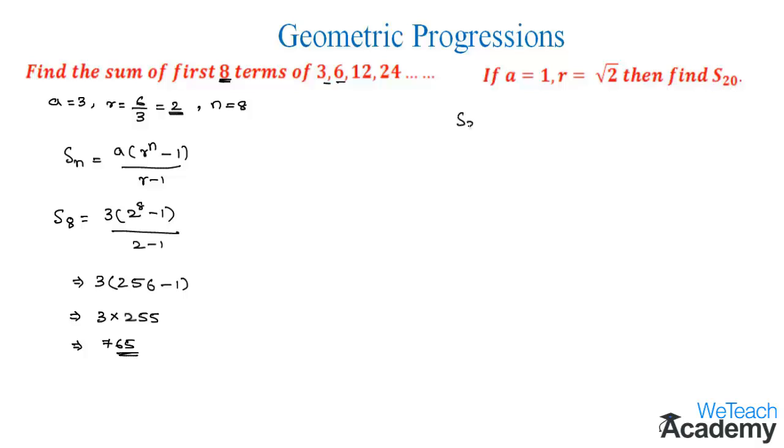We can find s20 by using the same formula. On substituting the values of a and r, we get 1 times root 2 whole power 20 minus 1 divided by root 2 minus 1. This we can write as 2 power 1 by 2 whole power 20 minus 1 divided by root 2 minus 1.